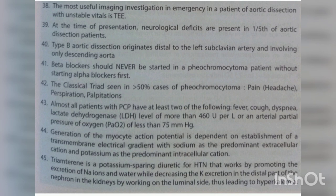The classical triad seen in greater than 50% of cases of pheochromocytoma is headache, perspiration, and palpitation. Almost all patients with PCP have at least two of the following: fever, cough, dyspnea, LDH levels of more than 460 units per liter, or an arterial PaO2 of less than 75 mmHg.